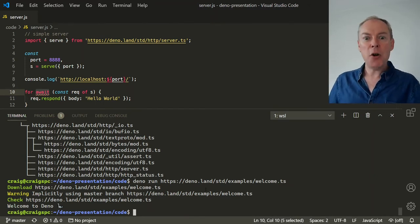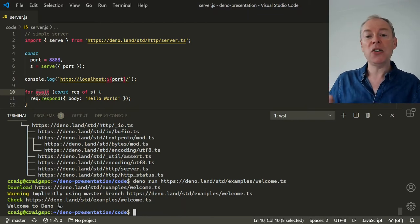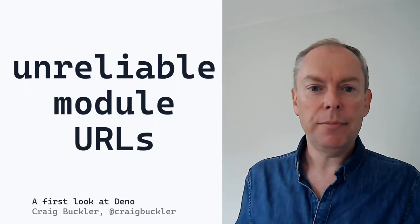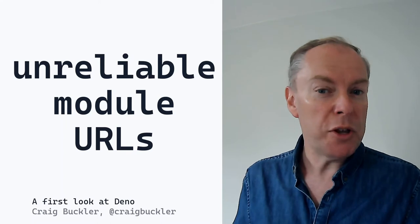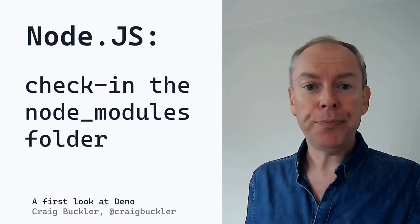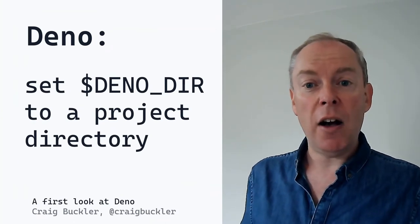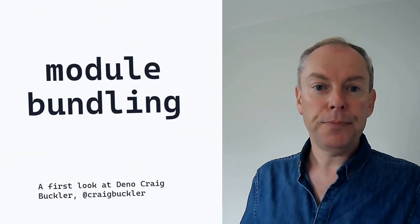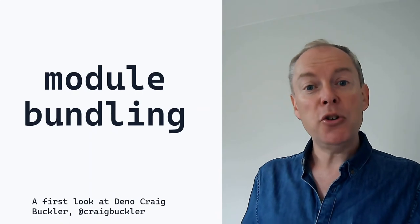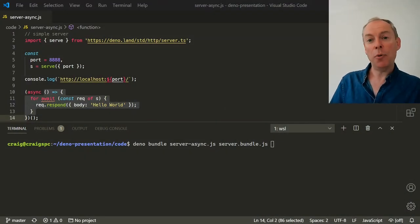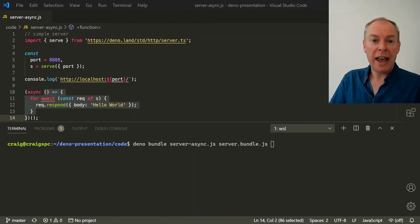You might think Deno's module system sounds horrific, but most of your concerns will have solutions. Of course, URLs can go down or disappear — an issue which can affect any package manager, and NPM has been hit in the past. For mission-critical Node apps, it's best to add your node_modules folder to your repo. Similarly in Deno, you can change the DENO_DIR environment variable to point to a directory within your project, so modules are cached there and you can commit them to your repo. Bundling is another option: Deno allows you to bundle all cached dependencies into a single JavaScript file for a production server. Bundling doesn't currently support top-level awaits in your main script — it's a known bug — but you can work around it by wrapping awaits in anonymous async functions.